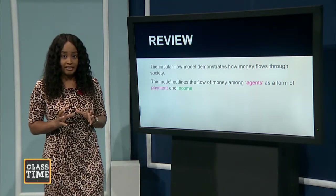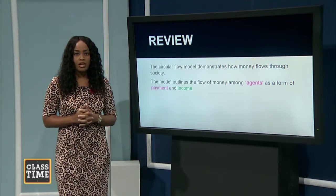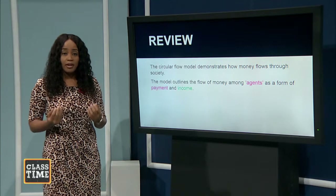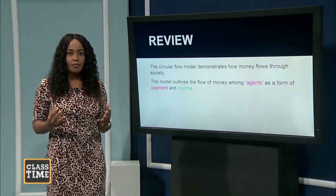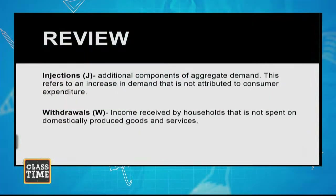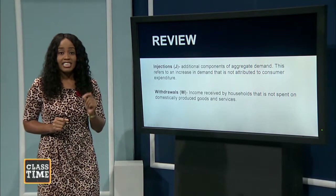Last week you were introduced to the circular flow model, which seeks to explain the flow of money in an economy in terms of income and payments. We also looked at the economic agents involved: households and firms for a two-sector model, and an expanded circular flow with four agents — households, firms, the international sector, and government. When the international sector is involved, we say it is an open economy because trade is taking place.